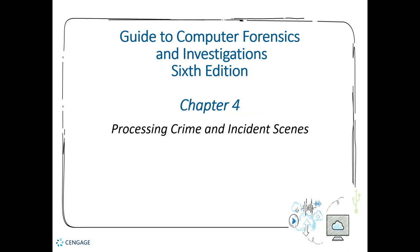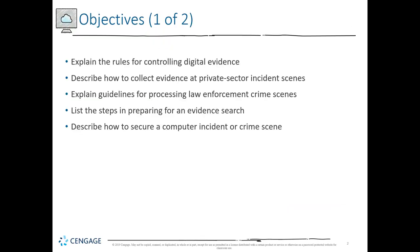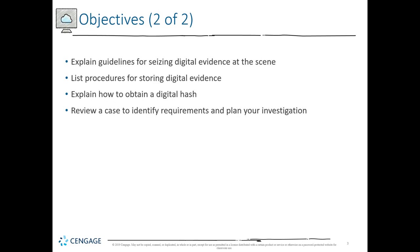Hello and welcome to Chapter 4: Processing a Crime Scene and Incident Scene. This chapter focuses on examining the rules for collecting digital evidence in both the private sector — businesses and corporations — and public sector, which is law enforcement. You'll look at guidelines and steps for preparing for an evidence search, how to describe and secure a computer incident or crime scene, and procedures for storing digital evidence and obtaining digital hashes for evidence verification.